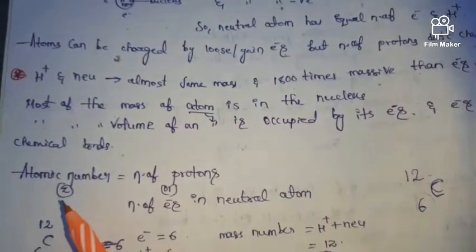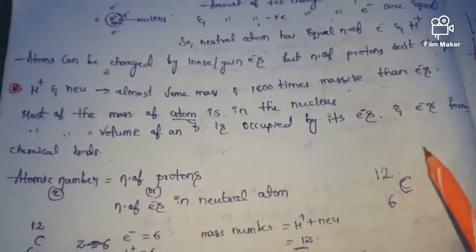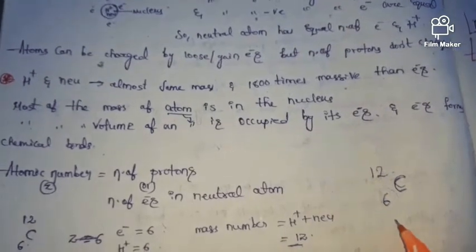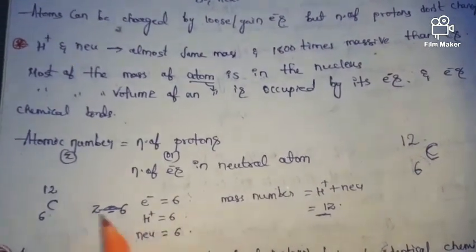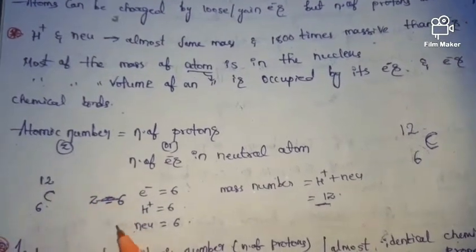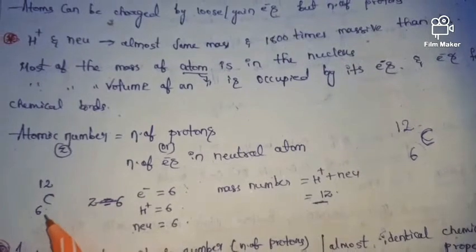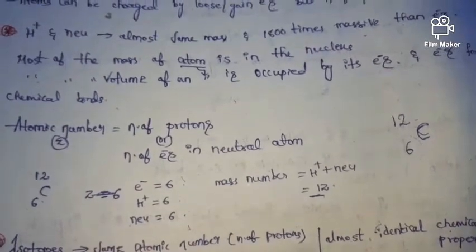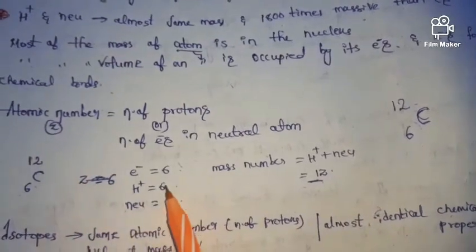Atomic number is equal to number of protons and number of electrons in a neutral atom. Atomic number is equal to number of electrons in a neutral atom. So atomic number equals number of electrons equals number of protons. Here, electrons are 6, atomic number is 6, protons are also 6 since this is a neutral atom. For neutrons, we subtract atomic number from mass number — so neutrons are also 6. Mass number equals number of protons plus number of neutrons, so here we get 12. The mass number of carbon is 12.